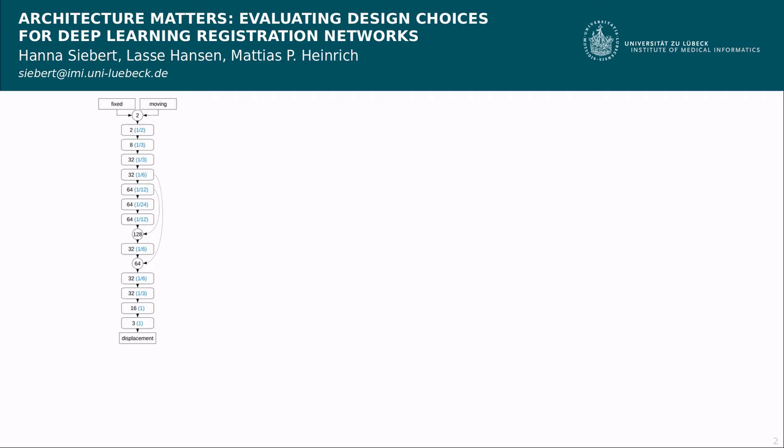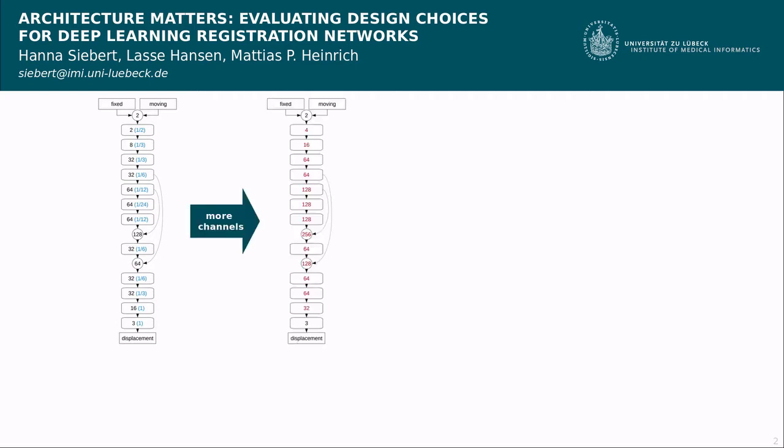Our investigations start with a registration model with a very basic structure. The first modification we make to this initial architecture is to double the number of feature channels of all convolution layers of the network.